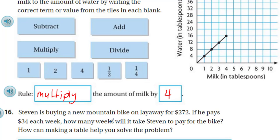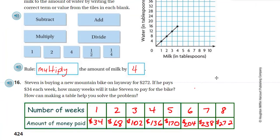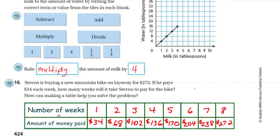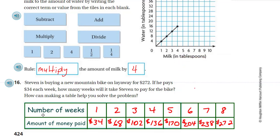Now we can get going. Steven is buying a new mountain bike on layaway for $272. Wow. That's a lot of money. If he pays $34 each week, how many weeks will it take Steven to pay for the bike? How can making a table help you solve the problem? Well, when I think of this problem, of course, I'm wanting to divide immediately. However, I have to think about how would a table help me? If we put the number of weeks along with the amount of money paid, you can see that it increases each time by the $34. That is one way you could have done it.